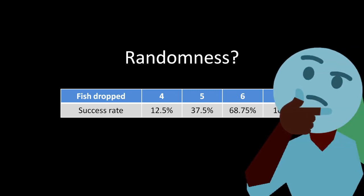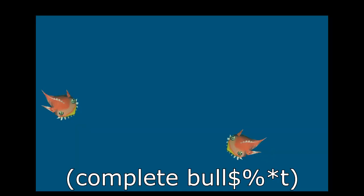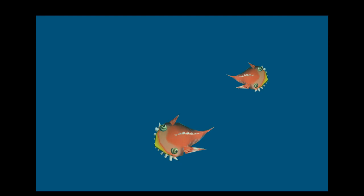The answer to that question is actually no — it's not random at all. Here I have a highly sophisticated simulation of how this really works, and it's based purely on the movement of the two fish in the tank. Whichever one is able to move to the fish that you dropped first will be the one that eats it.